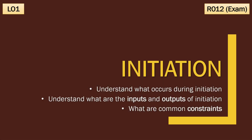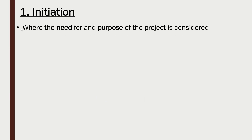We're now going to consider the first phase of four in our project lifecycle: initiation. We'll look at what occurs during this phase, what the inputs and outputs are, and what some common constraints are. Initiation is our first phase of four — we start with initiation, then planning, then execution, then evaluation.